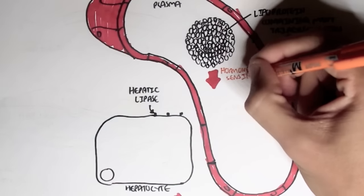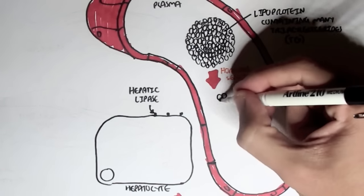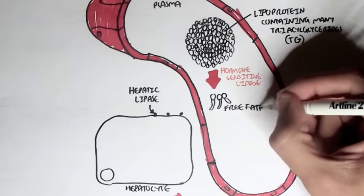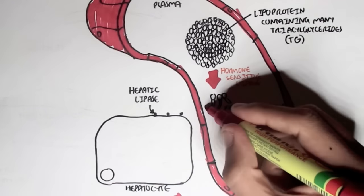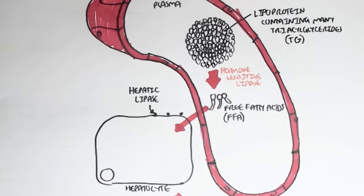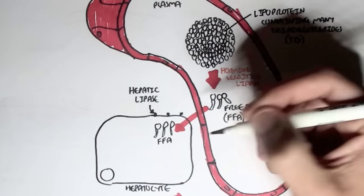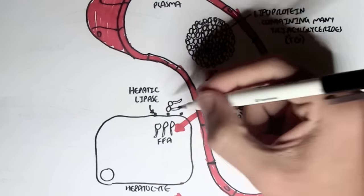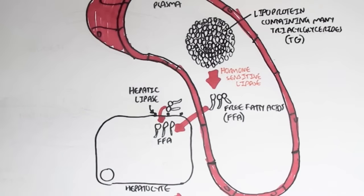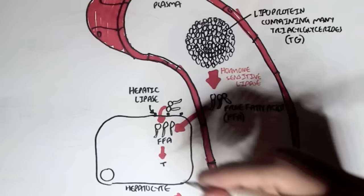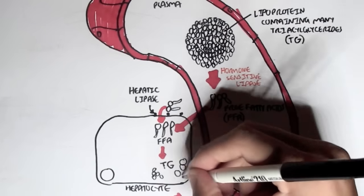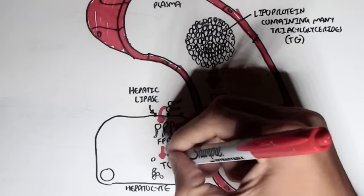Now an enzyme, hormone sensitive lipase, essentially hydrolyzes triglycerides or diglycerides to form free fatty acids within the plasma. The free fatty acids are then uptaken or brought into the hepatocyte. So now the hepatocyte has many fatty acids. With many fatty acids, the hepatocyte can synthesize again triglycerides within the liver. Many triglycerides.